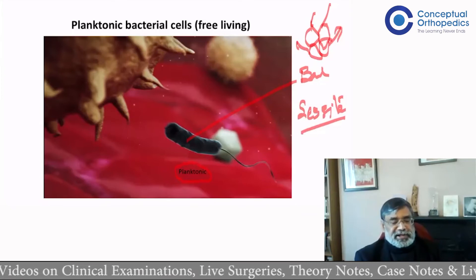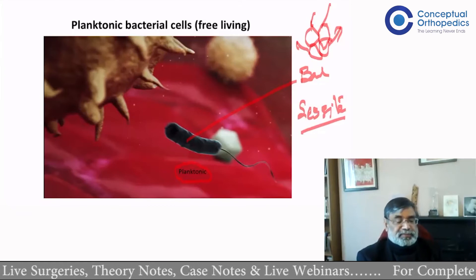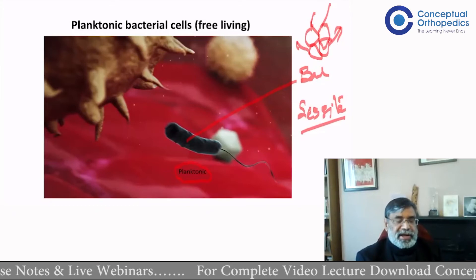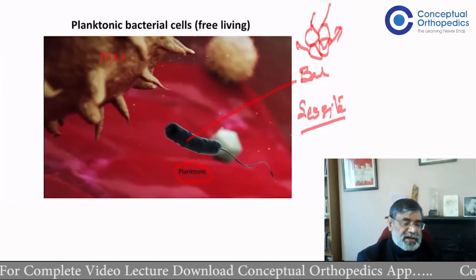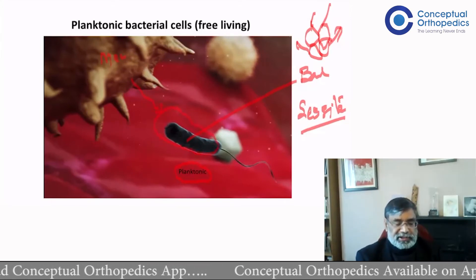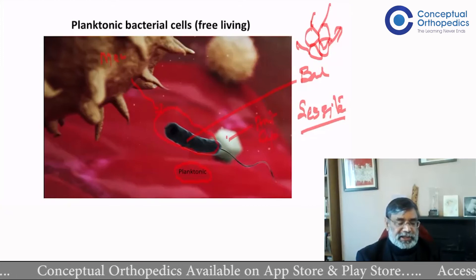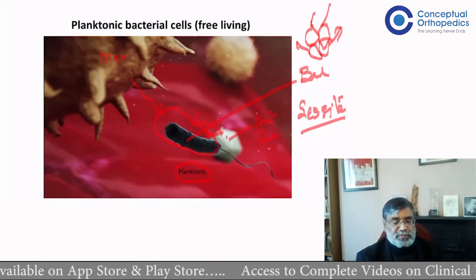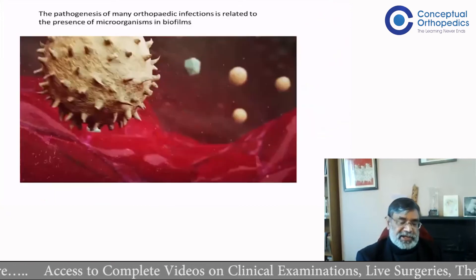If the bacteria is in the planktonic form, a couple of things can easily be done. First, white cells — consisting of granulocytes, lymphocytes, and macrophages — can work as a defense mechanism and attack it. A free-floating macrophage can easily eat this planktonic bacterium. Also, if you give an antibiotic, for example a cephalosporin molecule, it can easily kill this bacterium. So planktonic bacteria are easy to kill — both by antibiotics and by macrophages.